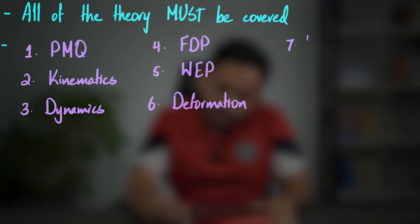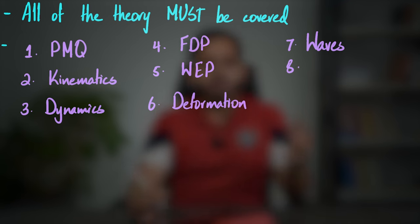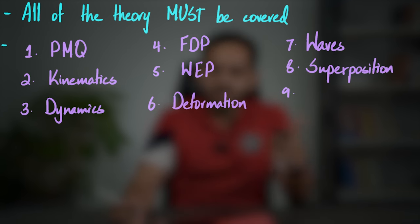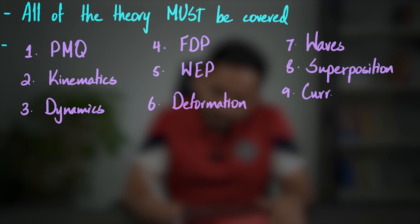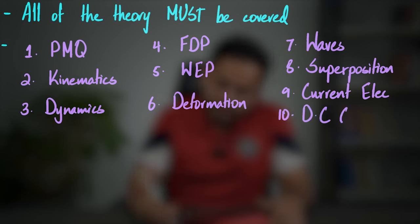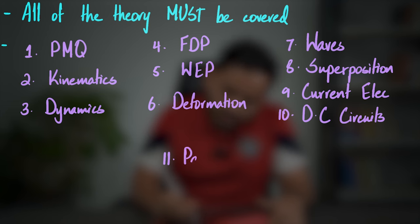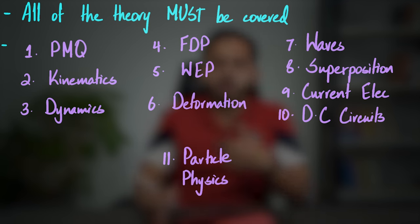Now the mechanics topics are done. The seventh topic is waves — starting with the easier basics of waves. The eighth is superposition, covering more advanced wave phenomena like diffraction, diffraction gratings, and stationary waves. For electricity, there's a basic part — current electricity — and a more advanced part: DC circuits. Finally, the last topic is particle physics, which is honestly one of the easiest chapters in the syllabus.